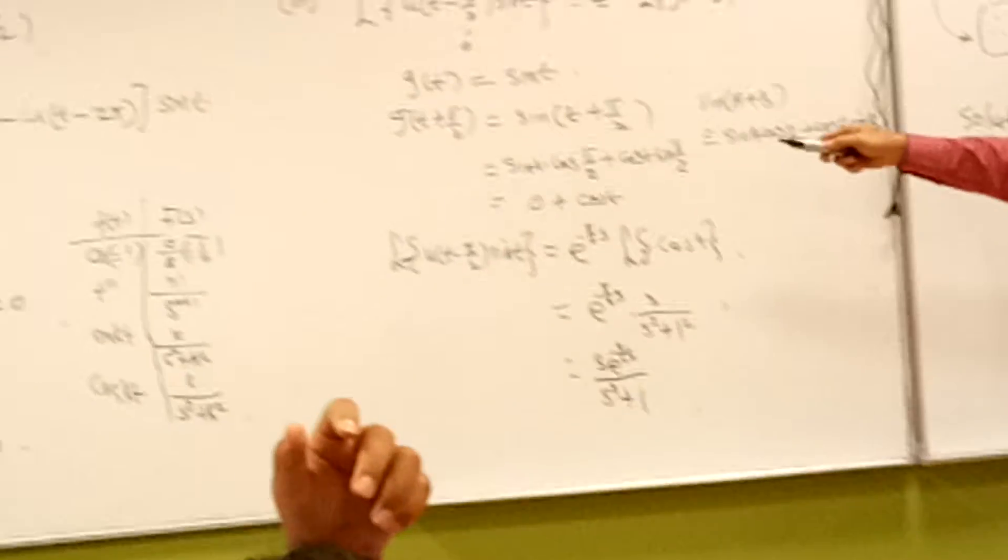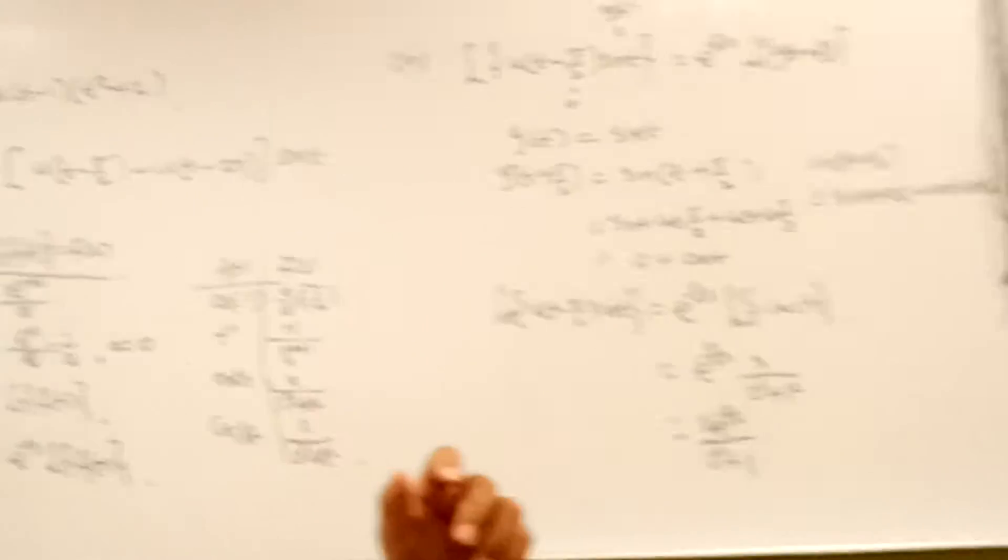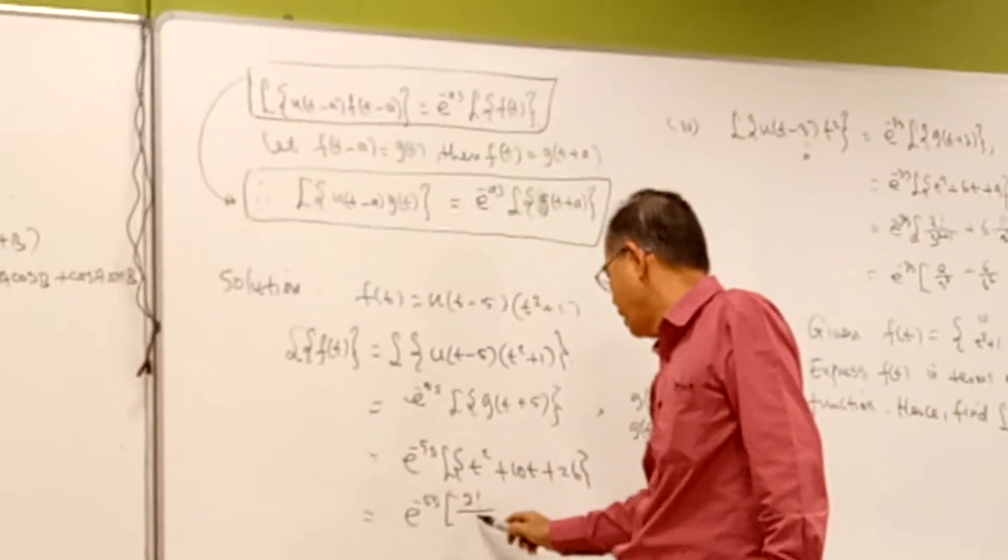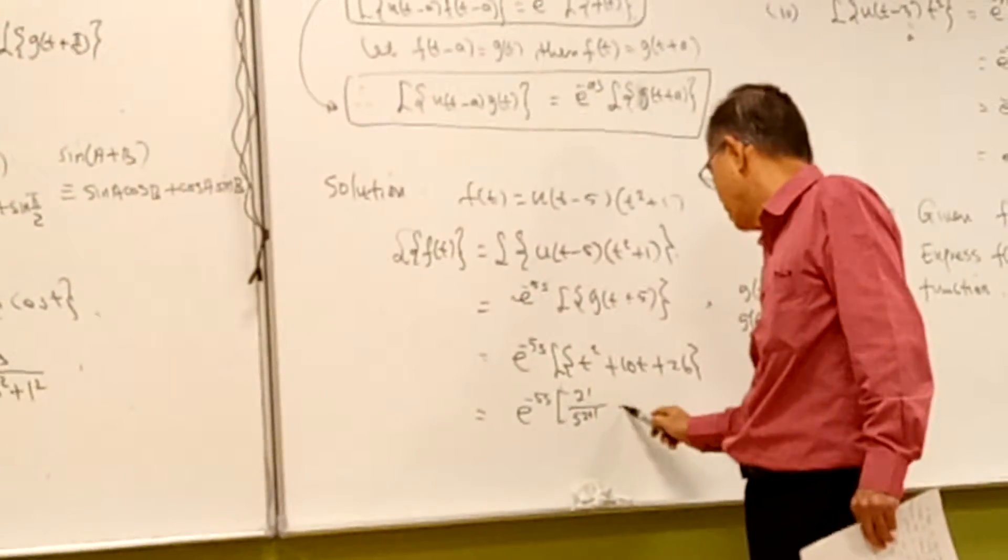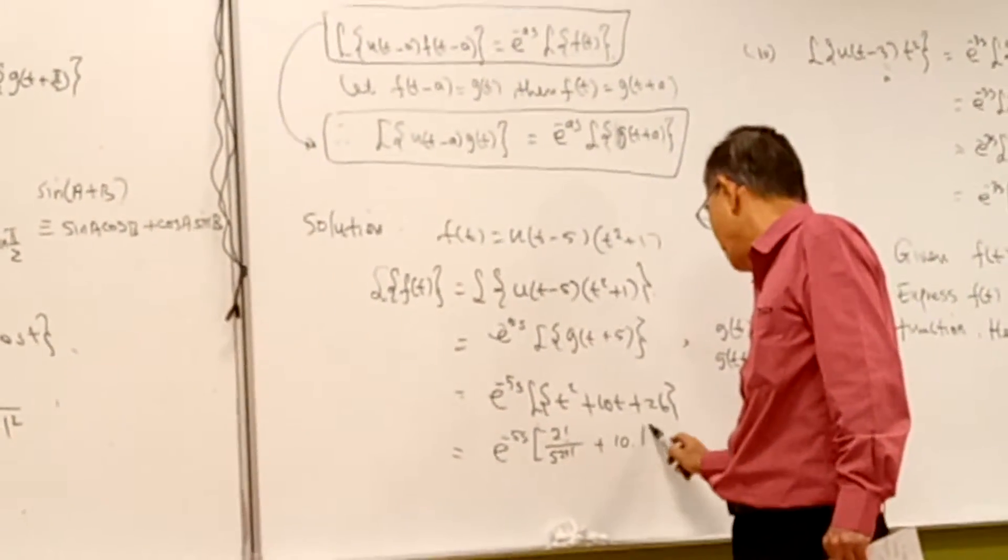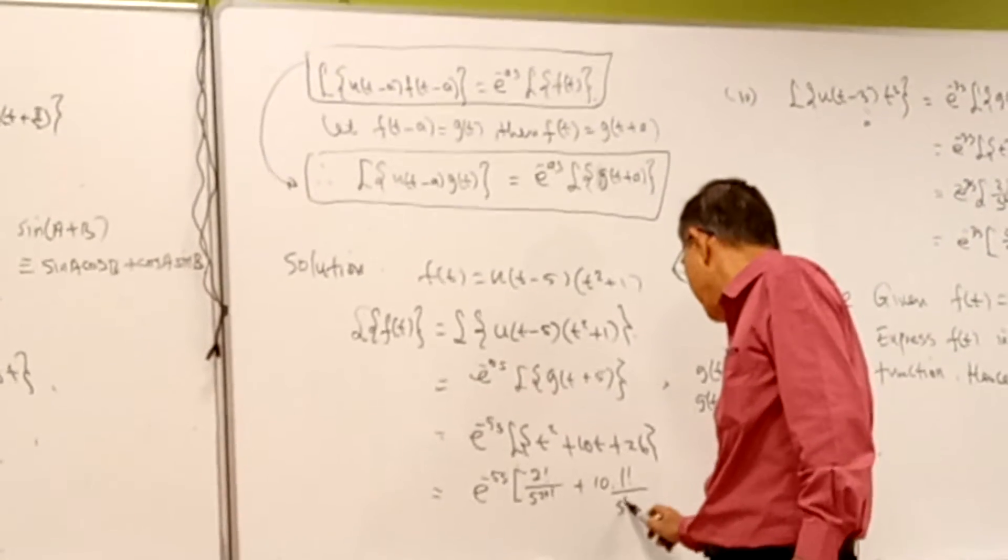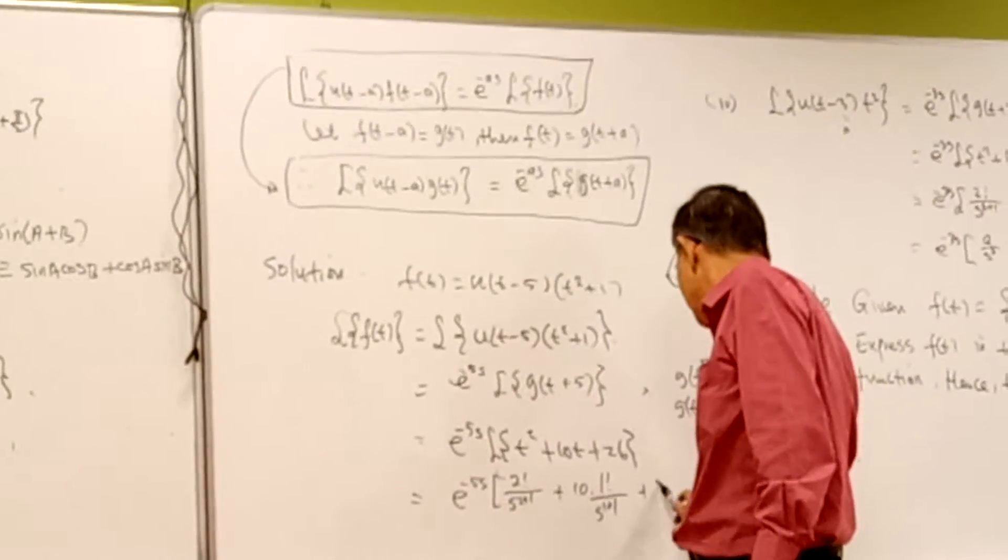Look at the table: for t², n is 2, so 2 factorial over s^(2+1). Then 10 times 1 factorial over s^(1+1), plus 26 over s.